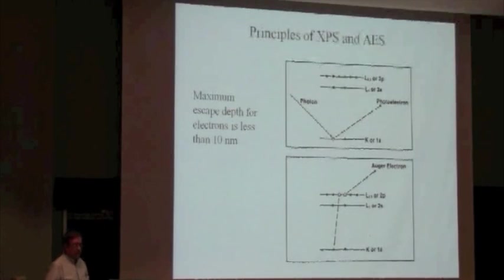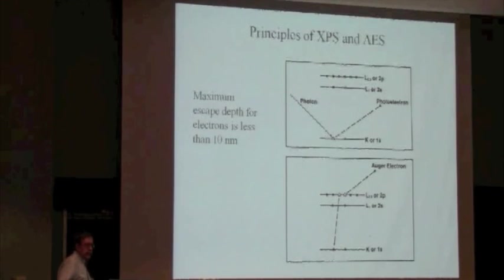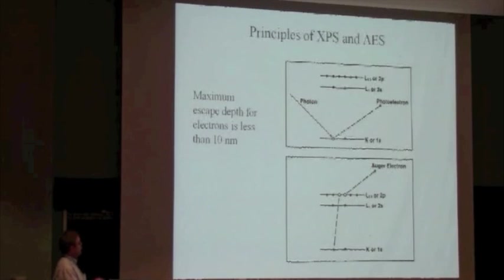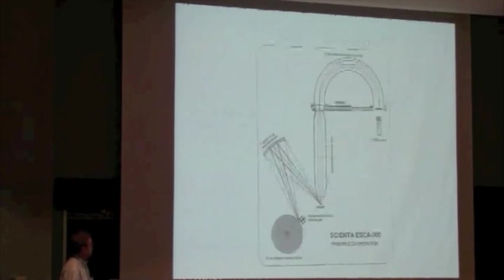The other peaks that appear in an XPS spectra are Auger peaks. Typically that's thought of as being an electron beam hitting the sample surface, but you do get them in the XPS spectra, and it's because once you've established that core-level hole, you can have a de-excitation of the excited atom via that Auger process.